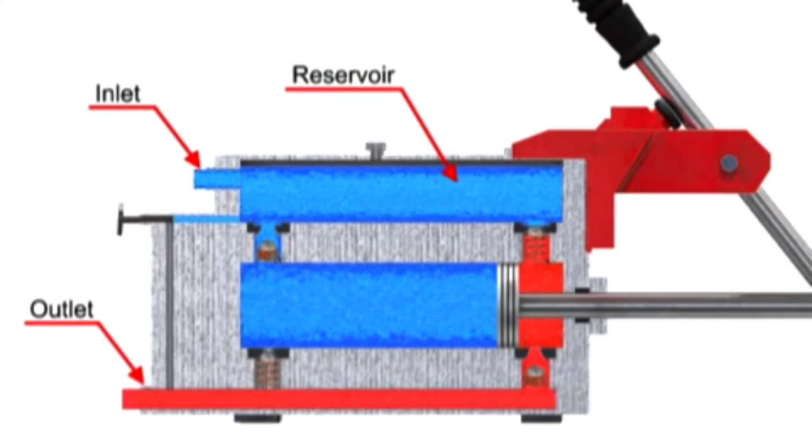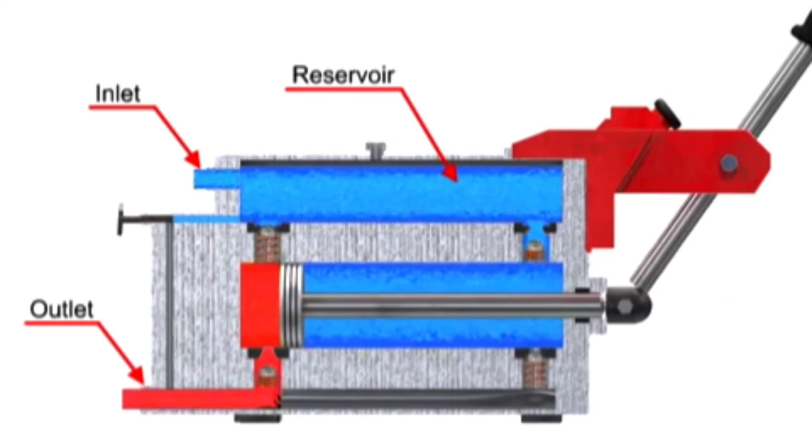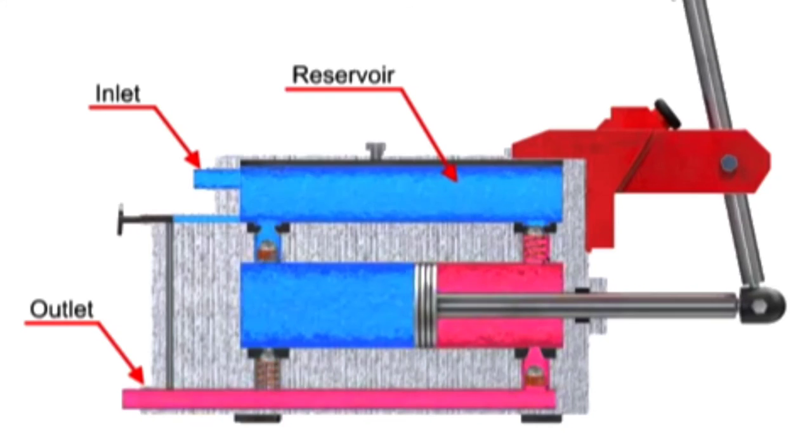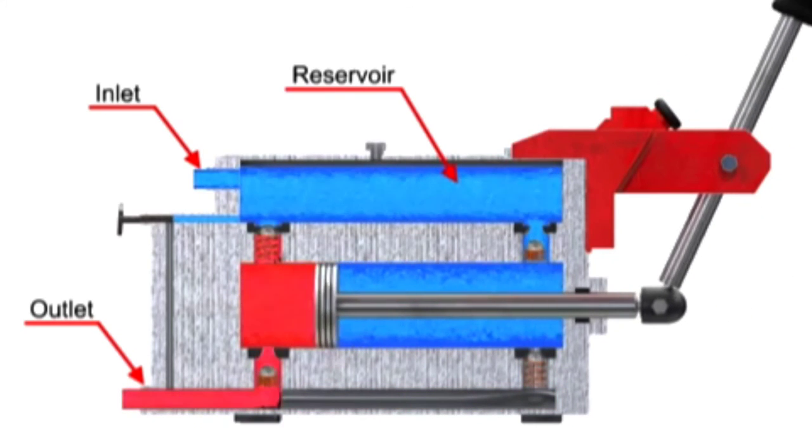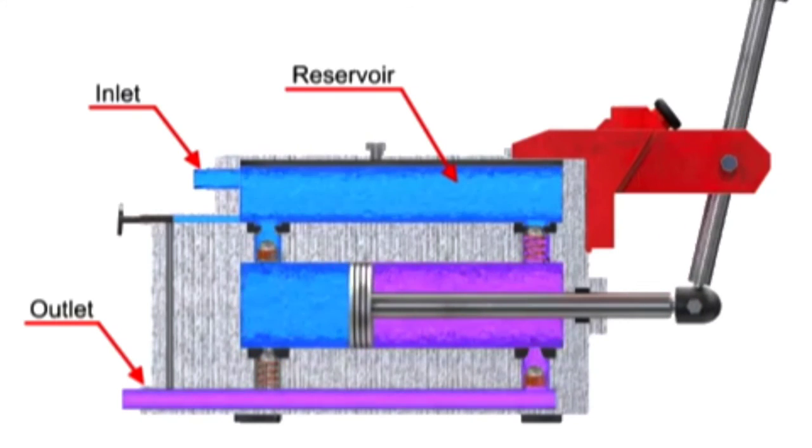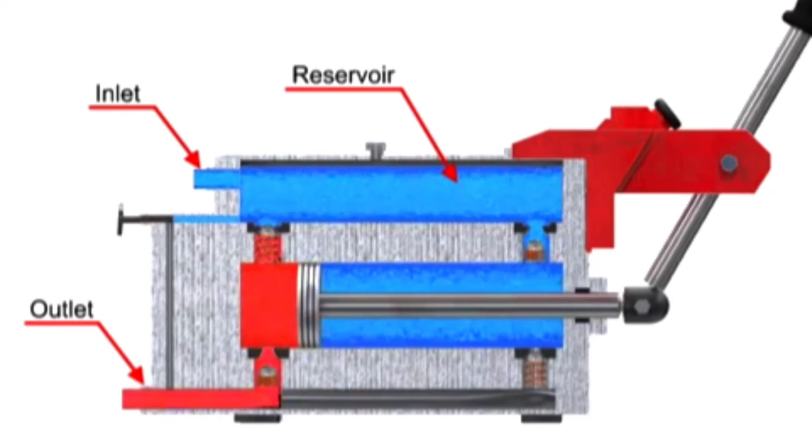Double acting hand pumps are more efficient, allowing fluid to both enter and discharge on both strokes of the piston. Moving the pump handle in either direction allows fluid to be drawn in from the reservoir and discharged via the outlet ports. Check valves in all locations prevent fluid backflow.